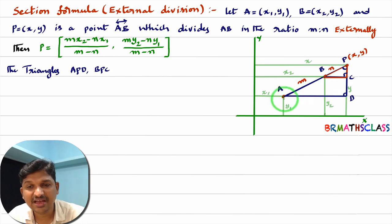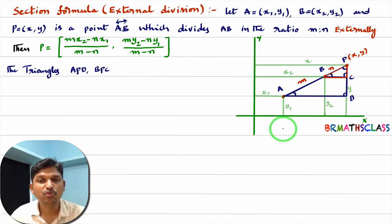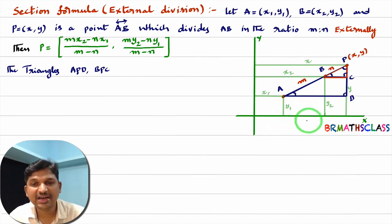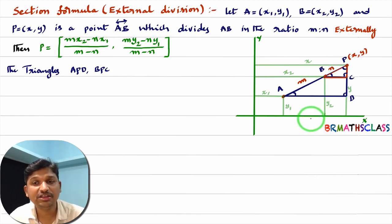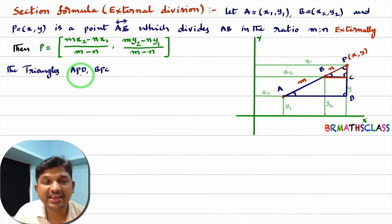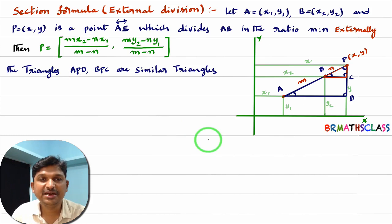Now, BC and AD are parallel, and AP acts as a transversal. In a transversal, we know that corresponding angles are equal. So in both triangles, all three angles are the same — by using the AAA property (angle, angle, angle). By using that property, we can say that triangle APD and triangle BPC are similar triangles. We know that in similar triangles, corresponding sides are proportional.